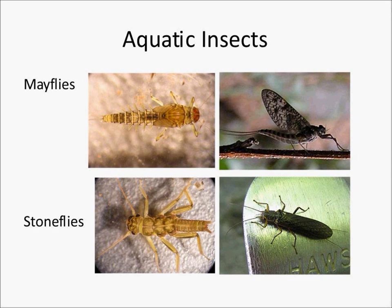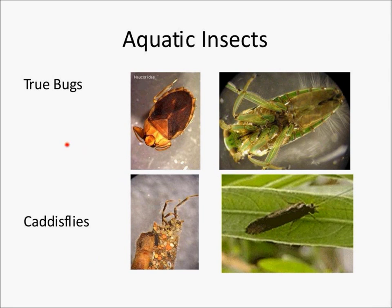Some more aquatic insects familiar to fishermen are the mayflies and stoneflies. Here we see a larval mayfly, an adult mayfly, a larval stonefly, and an adult stonefly. Here we see the true bugs, which often look like beetles and are often mistaken for beetles, but they are not beetles. Remember: all bugs are insects, but not all insects are bugs.